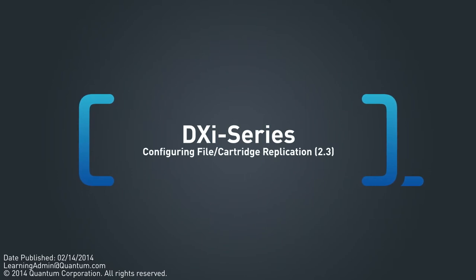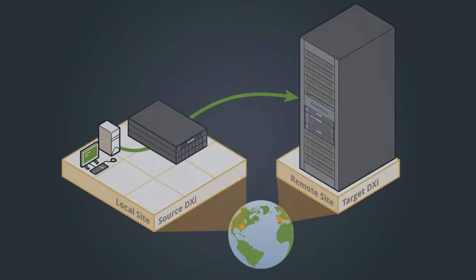This video is part of a series of videos on DXi replication. In this video, I'm going to demonstrate how to configure file cartridge-based replication for a NAS share. The configuration process is the same for a VTL partition, but this demonstration will focus on configuring a NAS share. Note that when referring to file cartridge-based replication for the NAS presentation type, the name directory-file-based replication is also used in the DXi user interface and documentation.